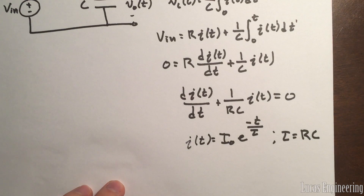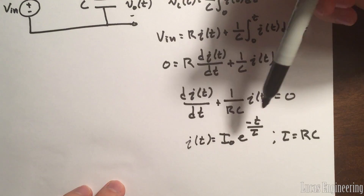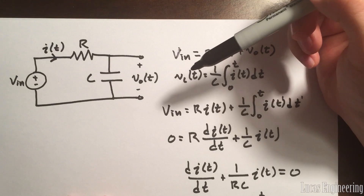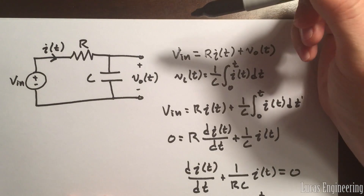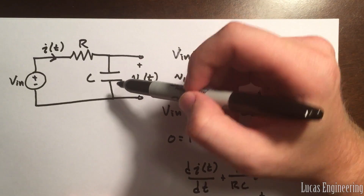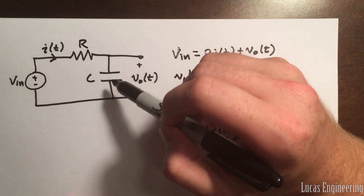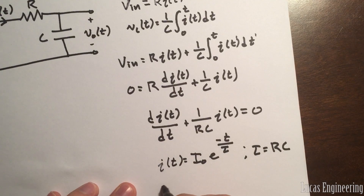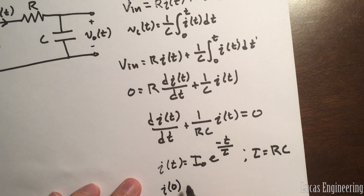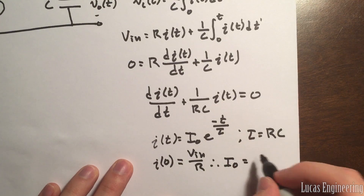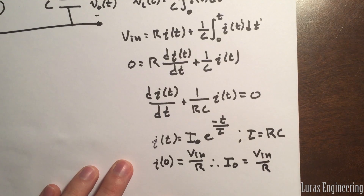Now we need to find the constant I₀. Think about the physics: at T equals zero when the switch closes, current starts flowing. The capacitor doesn't resist current initially — it acts like a short. So the only thing limiting current is the resistor R, and the initial current I(0) = V_n / R. Therefore, I₀ = V_n / R.